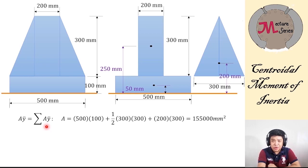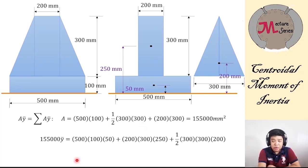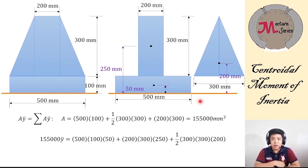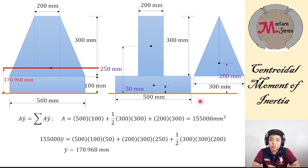Calculate the total area — we get 155,000 square millimeters. The right-hand side of the equation is the total static moment of area. For rectangle 1, that is 500×100 multiplied by 50. For rectangle 2, that is 200×300 times 250. And for the triangle, one-half times 300 by 300. Calculating the centroid gives 170.968 mm — that is the location of our neutral axis.